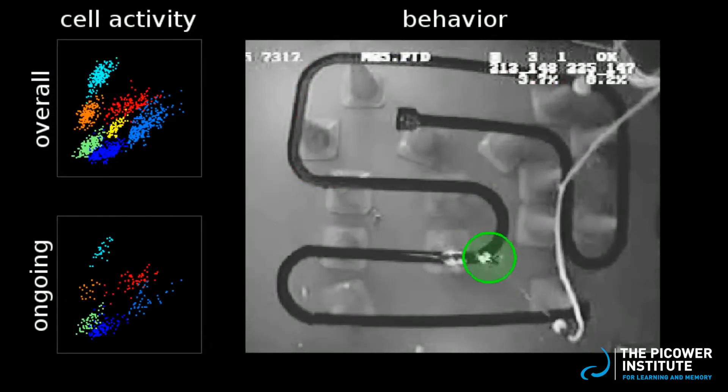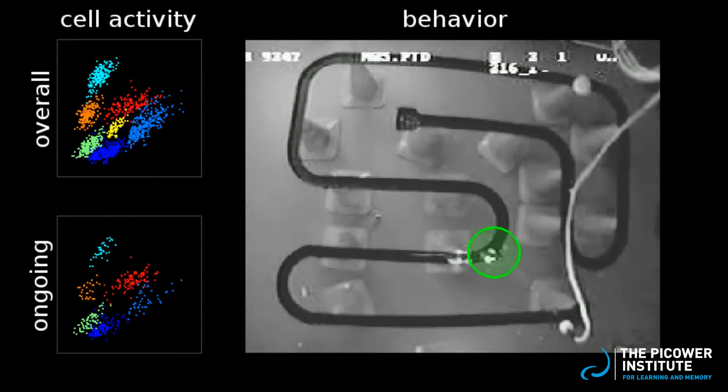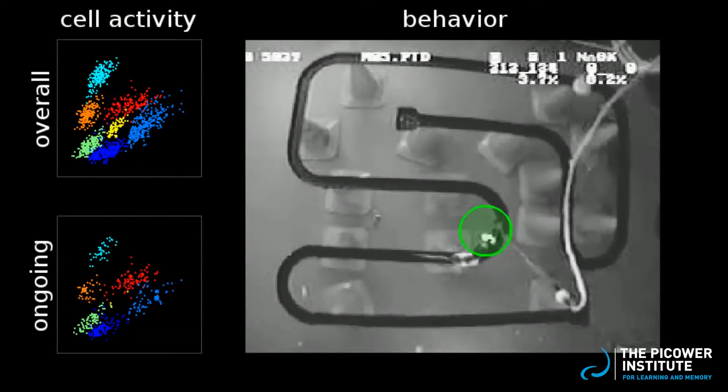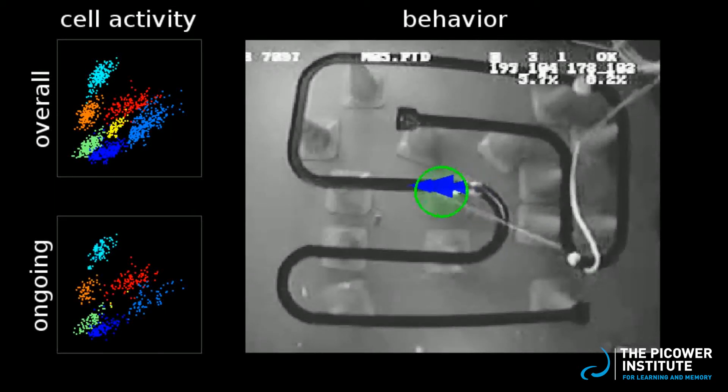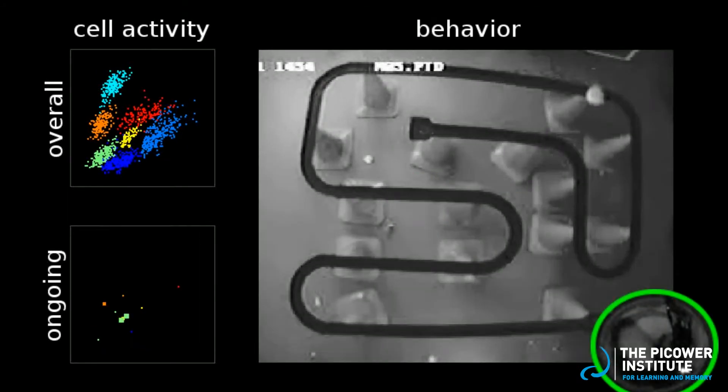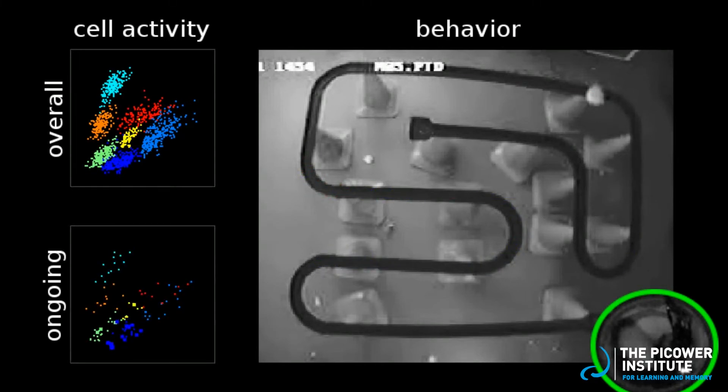These sequences are replayed much faster than the rat's running speed, and they are observed in both the forward and reverse directions, with the blue arrows depicting forward replay and the red arrows depicting reverse replay. This replay activity also happens when the rat is asleep, as if he were dreaming about the track. Sleep is beneficial to memory, and sleep-dependent replay is thought to be a fundamental way the brain makes memory stronger during sleep.